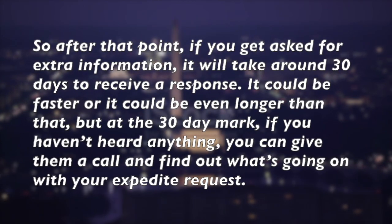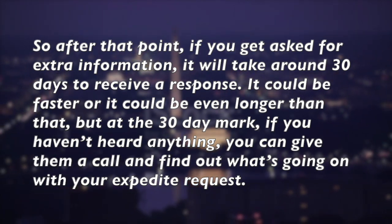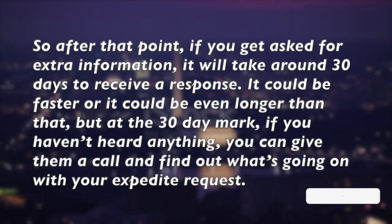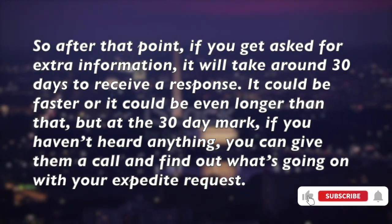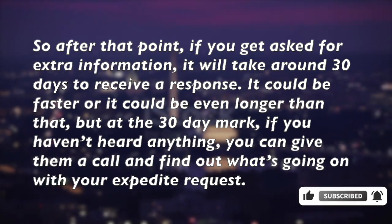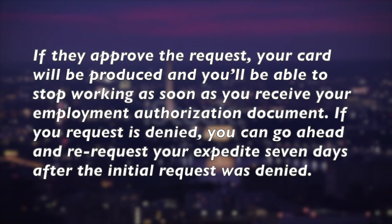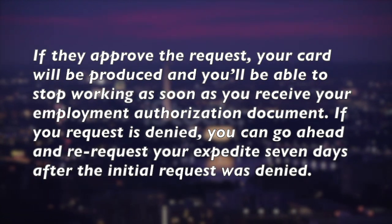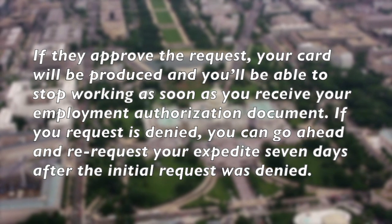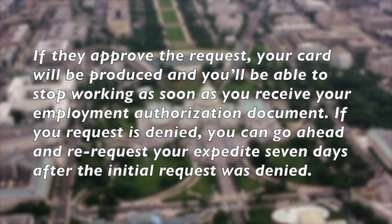This can include miscellaneous expenses like providing training, uniforms, or hiring someone else. After being asked for extra information, it will take around 30 days to receive a response — it could be faster or longer. At the 30-day mark, if you haven't heard anything, you can call them to find out what is going on with your expedite request. If they approve the request, your card will be produced and you can start working as soon as you receive your employment authorization document.